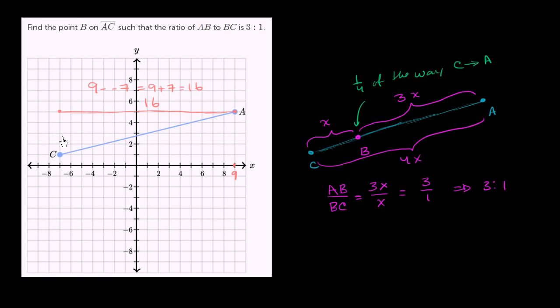And the vertical change, you could even just count that, that's going to be 4. C is at 1, A is at 5. Going from 1 to 5, you've changed vertically 4.